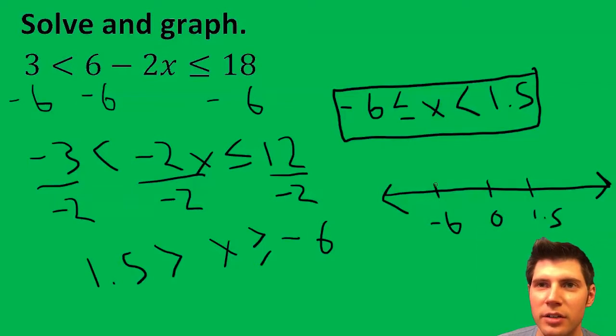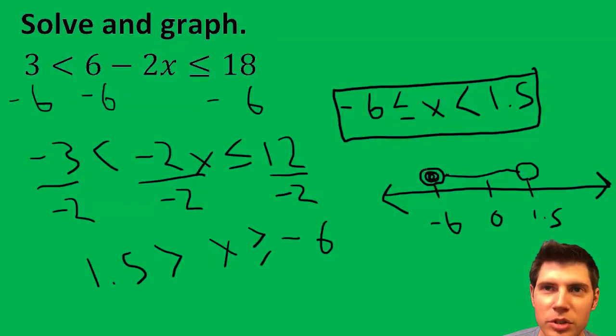At the -6 and at the 1.5, I have the dots. This says x is greater than -6 but less than 1.5, so it's in between those two. I want to shade in this dot because since it's 6 is less than or equal to, the dot is shaded in because it's part of the line.